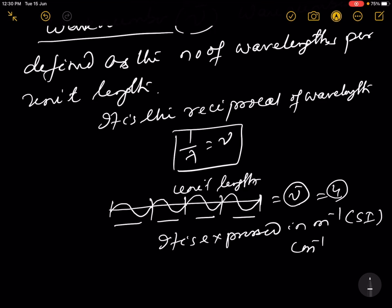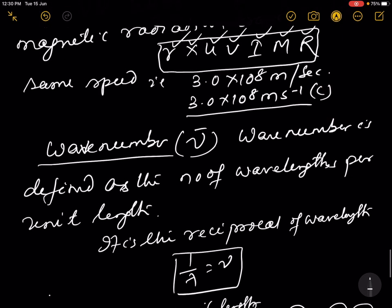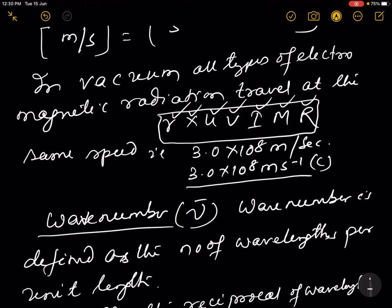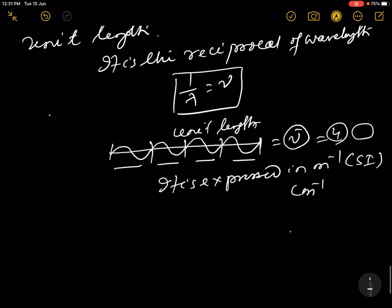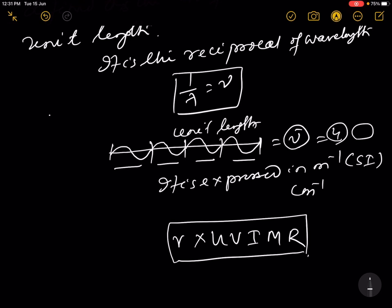Here is a trick to remember the complete electromagnetic spectrum: R-Mi-BHU-X-Gamma, from right to left. Thank you for watching the video.